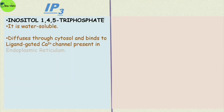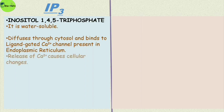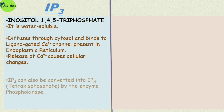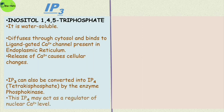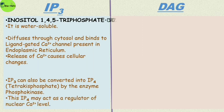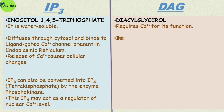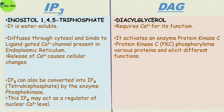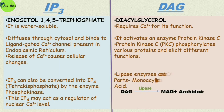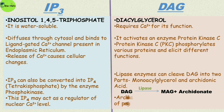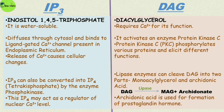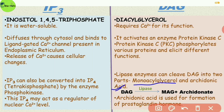IP3 — inositol-1,4,5-trisphosphate — is water soluble; it diffuses through the cytosol and binds to a ligand-gated calcium channel present in the endoplasmic reticulum, helping release calcium and causing cellular changes. IP3 can also be converted into IP4 by the enzyme phosphokinase, and IP4 may act as a regulator of nuclear calcium levels. DAG requires calcium for its action; it activates protein kinase C, which phosphorylates various proteins and elicits different functions. Lipase enzymes can also cleave DAG into monoacylglycerol and arachidonic acid, which is later used for formation of prostaglandins.